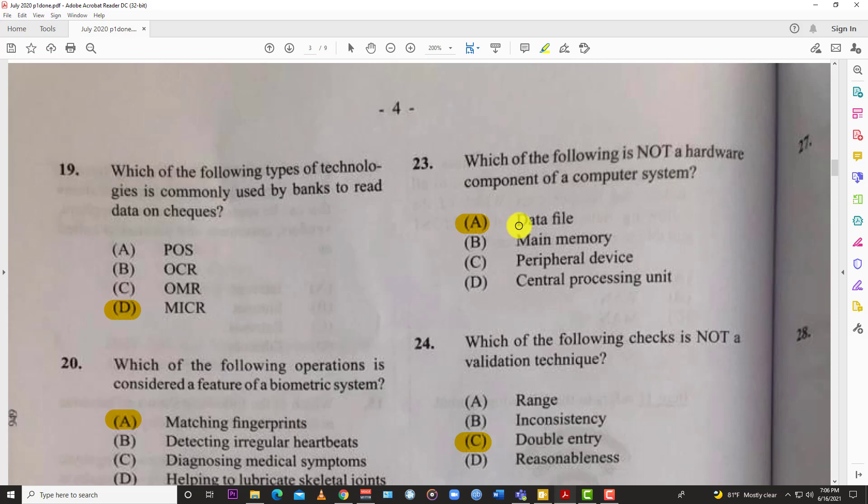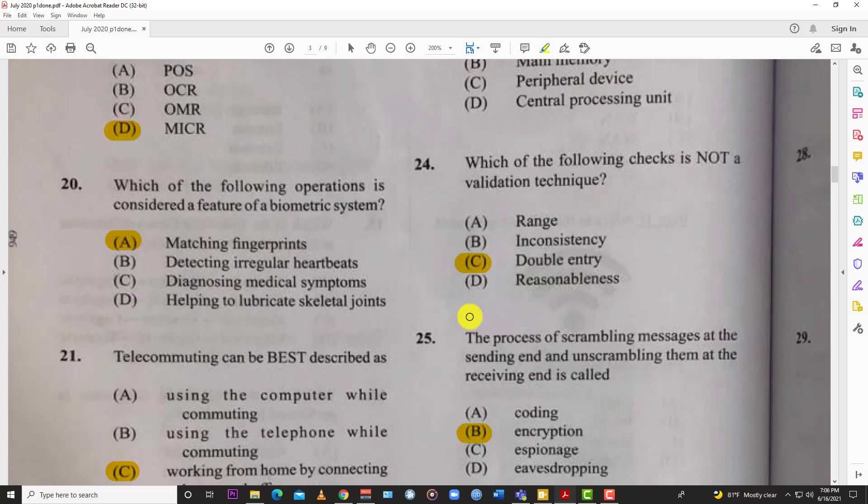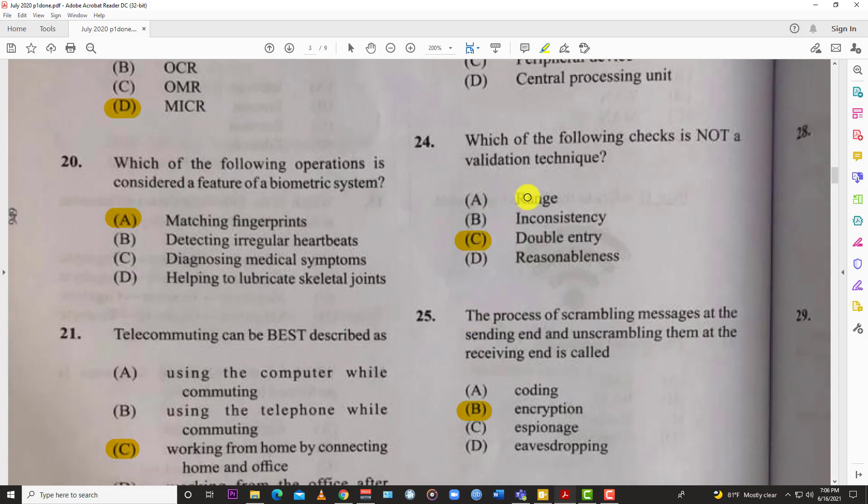Number twenty-four: which of the following is not a validation technique? We have C, double entry. Double entry system is a verification check, not a validation technique. I can make the same mistake twice, right? So that's not really a validation technique.